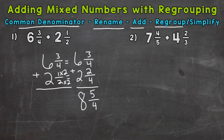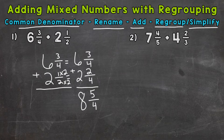Now we need to regroup and simplify. Five-fourths is an improper fraction — it's greater than one whole, so we don't want to leave our answer like this. We need to convert that five-fourths to a mixed number. So we do five divided by four. How many whole groups of four out of five? One whole group of four out of five. It doesn't hit five exactly — we have a remainder of one left over. Keep our denominator of four the same. So five-fourths equals one and one-fourth.